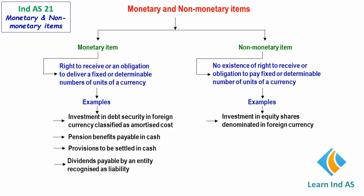An example of a non-monetary item is investment in equity shares denominated in foreign currency. This is recorded as a non-monetary item because the entity will be able to get the investment back only by selling it on a stock exchange or privately. In other words, the entity has no right to receive a fixed or determinable number of units of such foreign currency from the issuer.